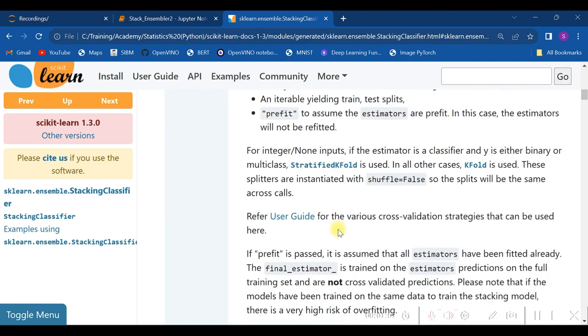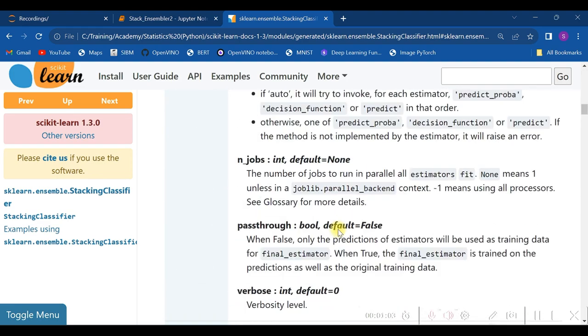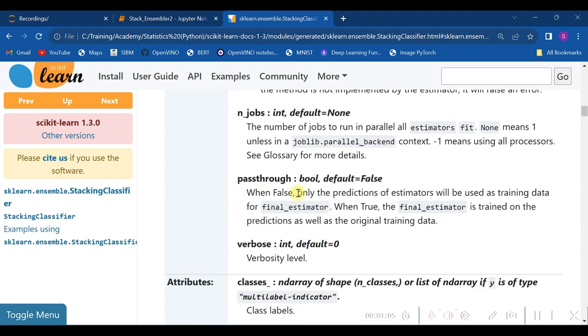For pass-through, the explanation has been given that when it is false, only the predictions of estimators will be used as the training data for the final estimator. When it is true, final estimator is trained on the predictions as well as on the original training data.